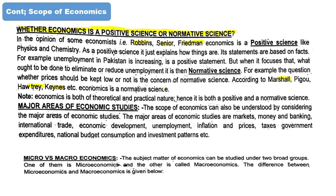Positive science and positive economics deals with how things are. For example, we discuss facts about Pakistan's poverty, inflation, and foreign debt — these are positive statements. Normative economics tells us what ought to be, for example, that we should work to eliminate unemployment, inflation, and foreign debt.